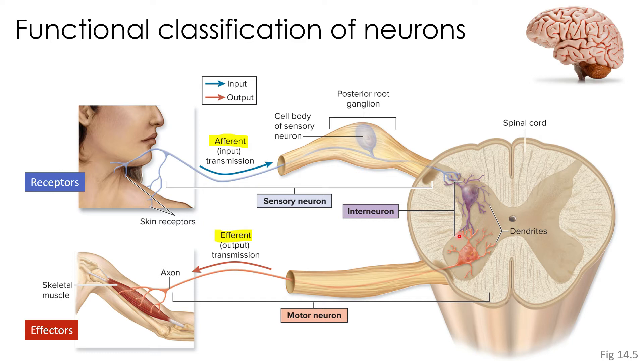Interneurons are the most numerous type of neuron — about 90% of our neurons are interneurons. And the more complex the response, the more interneurons are involved.